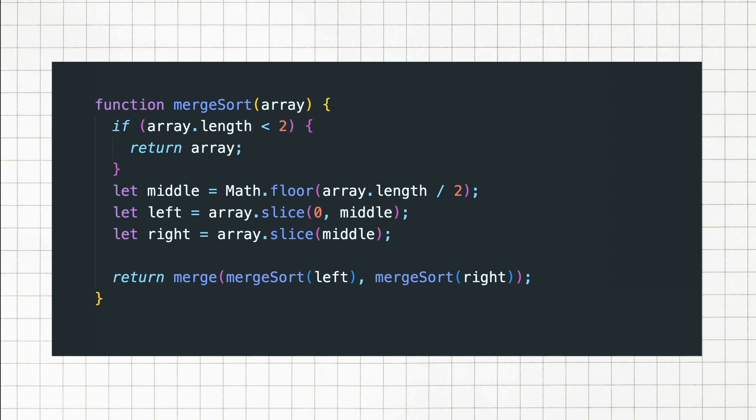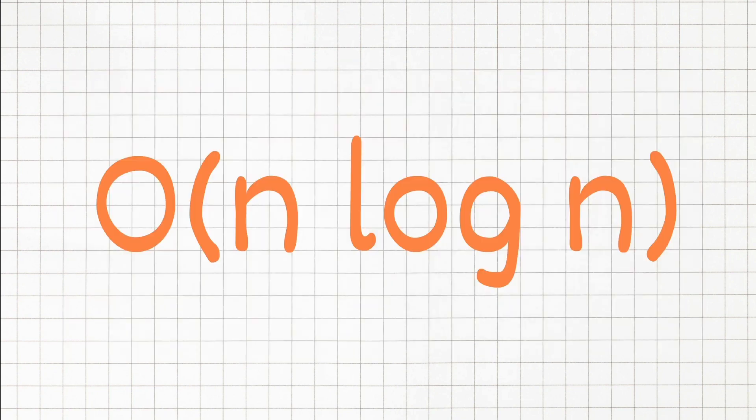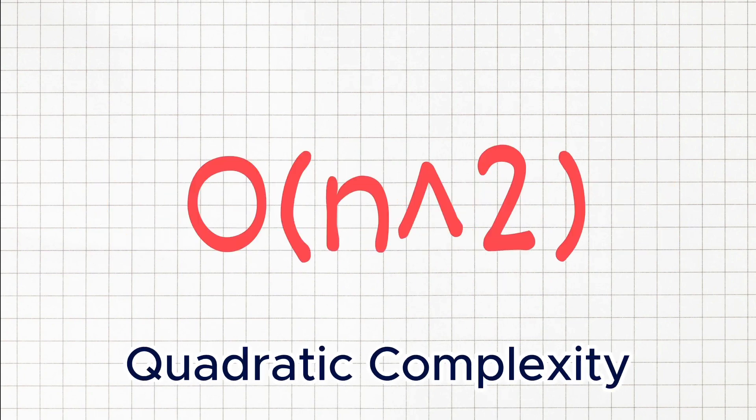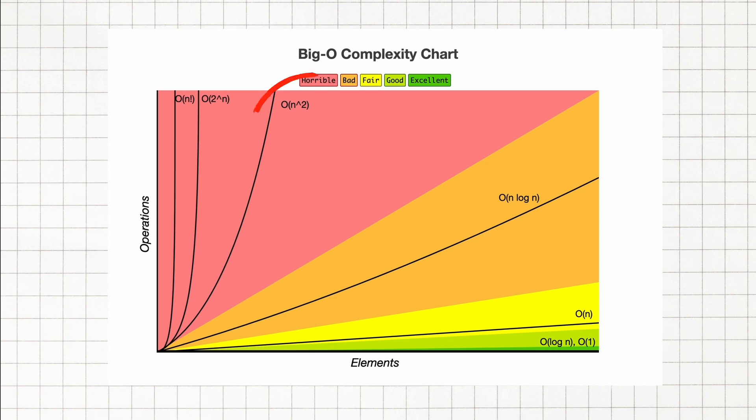This is a merge sort algorithm, it divides the problem down and then merges the solutions, resulting in an n log n complexity. Next we have O of n squared, or quadratic time complexity. This is seen when every element in a set needs to be compared to every other element. Think of it like this,